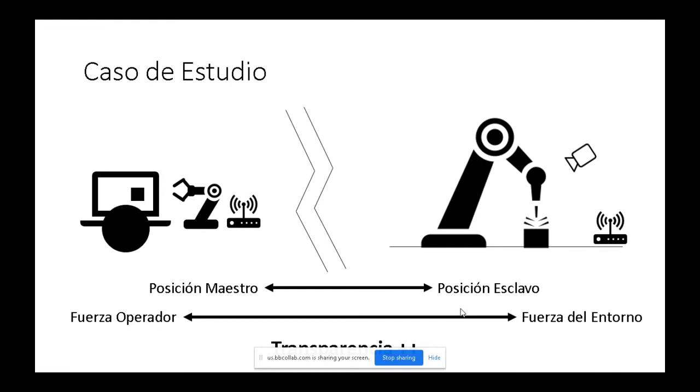Cuando nos referimos a transparencia del sistema, nos referimos a qué tan bien el operador está al tanto del estado del sistema remoto, es decir, qué tan bien percibe el sistema remoto.